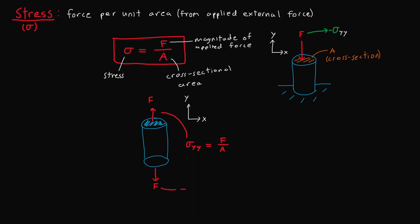And for the bottom force, since it acts downwards, this will be negative sigma yy. So that can be written as sigma yy equals negative F over A. Once again, remember that the area is the cross sectional area of the cylinder, as shown.